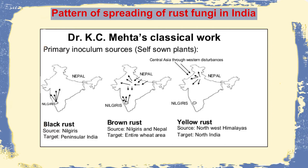The brown rust is actually coming both in North India and also in Western India — that is, from Nepal and from the Nilgiris — and spreading towards Central India or Madhya Pradesh. The third one is the yellow rust, which is coming from the Northwest Himalayas and spreading over the Northwest Indian plains, which is actually a threat because that particular region, that is Punjab, is highly productive in terms of wheat production.